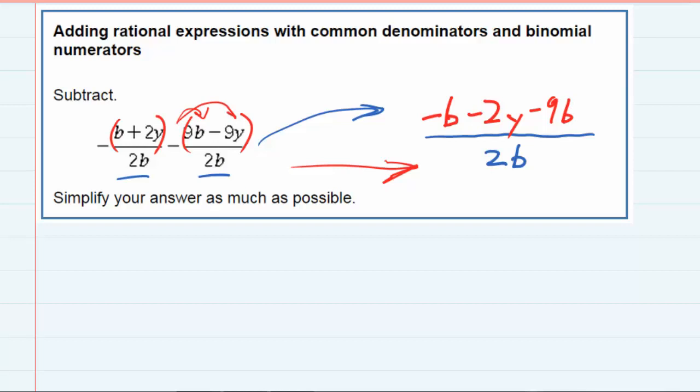Then minus times minus 9y gives us plus 9y. By distributing those negatives, we can now combine like terms in the numerator, keeping the denominator of 2b.